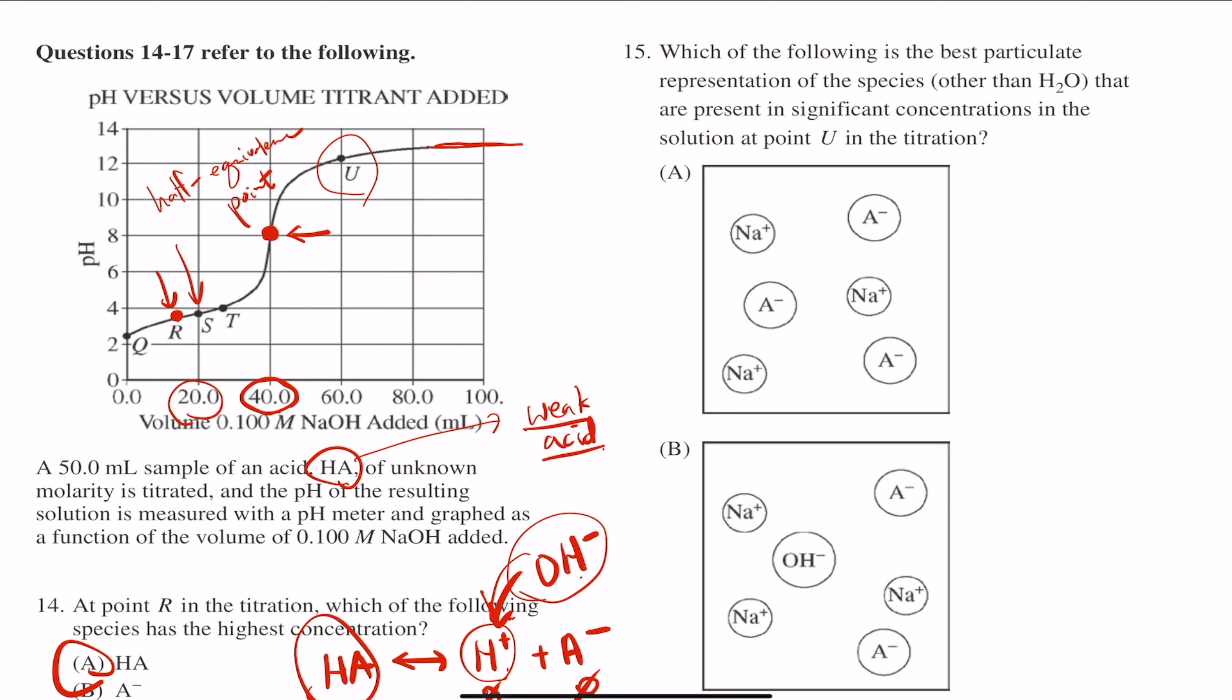Think about what's at U. If you're at point U, that means we are already done with the whole titration and now it's just a lot more basic. So all the acids must have all disappeared by now because right here at the equivalence points, your acid is already all consumed up.